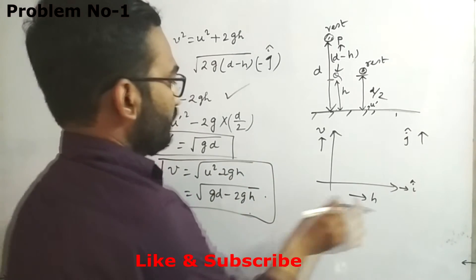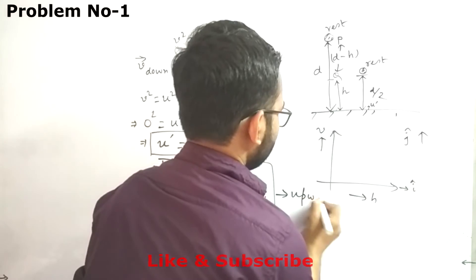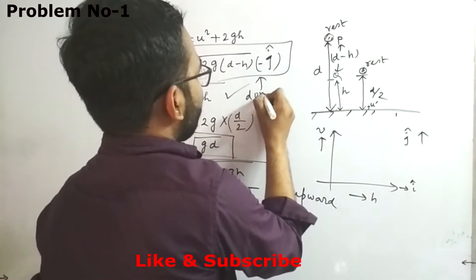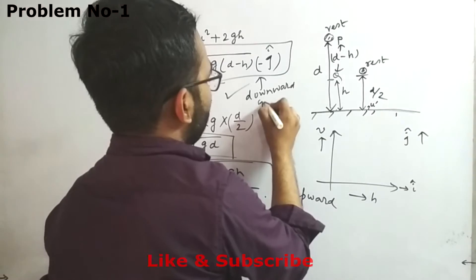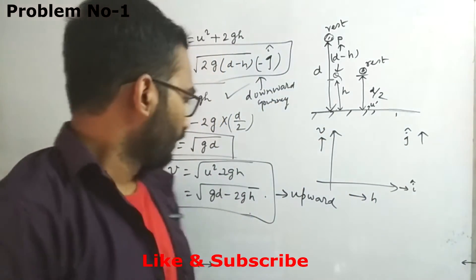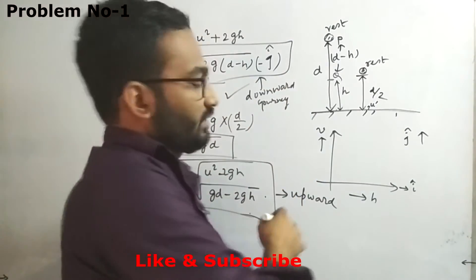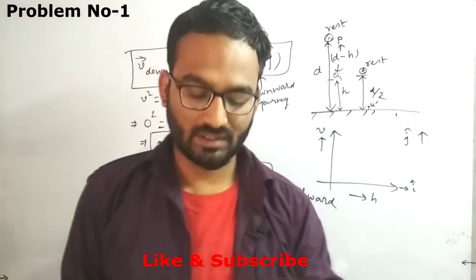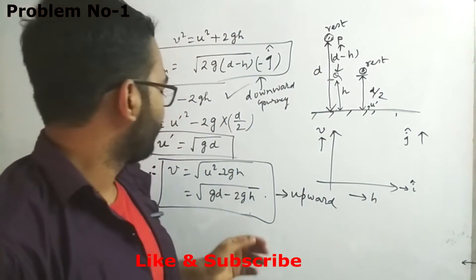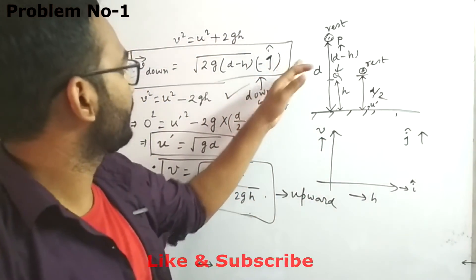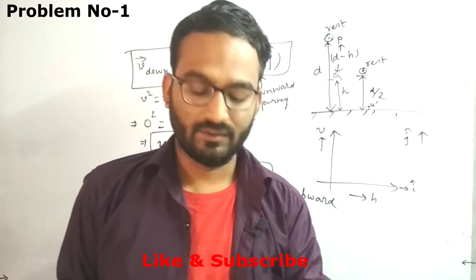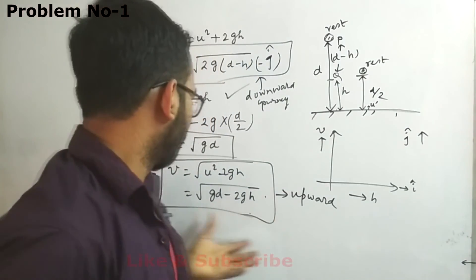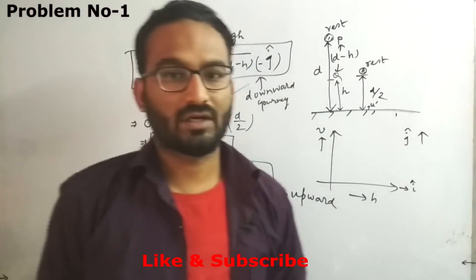This equation governs the upward journey, and the previous equation governs the downward journey. These equations direct us to choose the first option. At h = 0, we get some positive value. At h = d, the velocity is 0, which is clear from the downward motion equation. The correct option is option A.